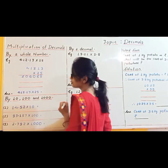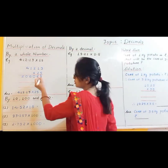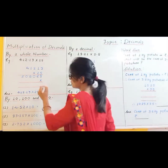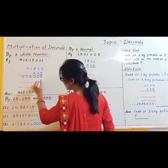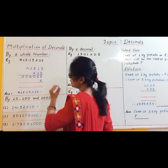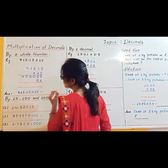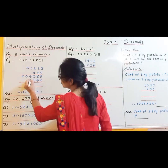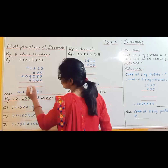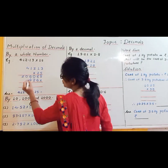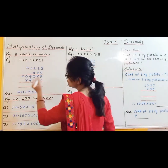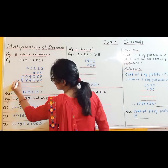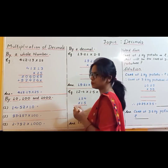Now the next row. First we put a cross here to add one space. Now multiply: 2 threes are 6, 2 ones are 2, 2 twos are 4, 2 ones are 2, 2 fours are 8. Now we have to add these two rows.